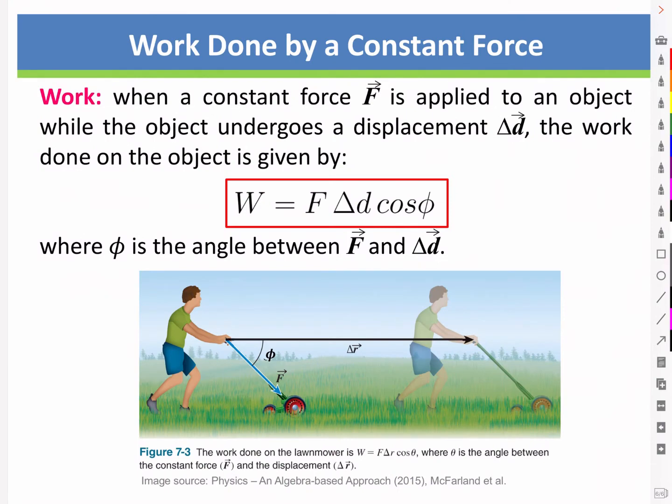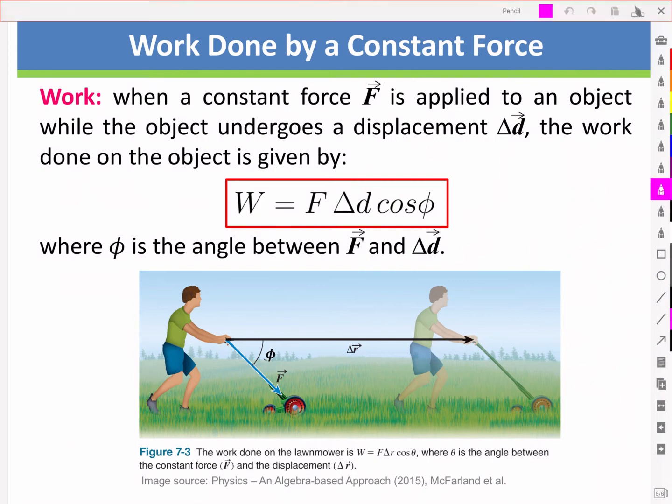More specifically, the work done when a constant force is applied to an object while the object undergoes a displacement delta d is given by the following. Work equals f delta d cos phi, where phi is the angle between the force vector and the displacement vector.